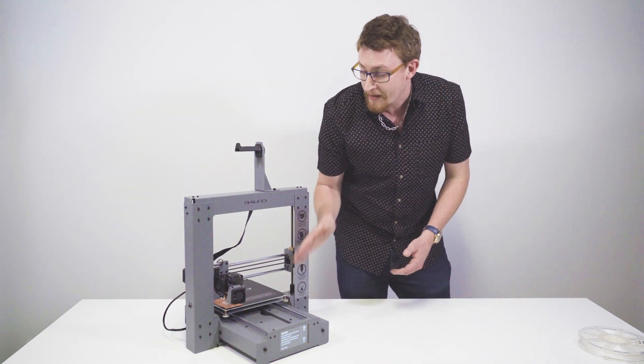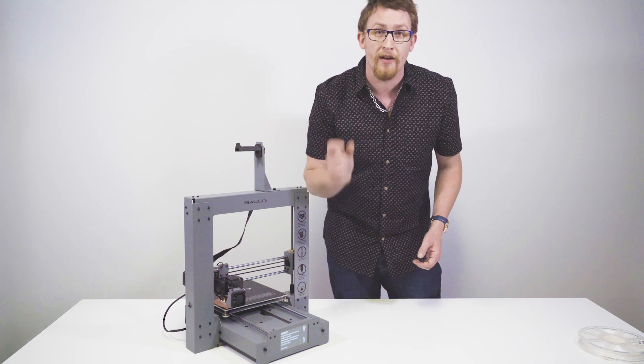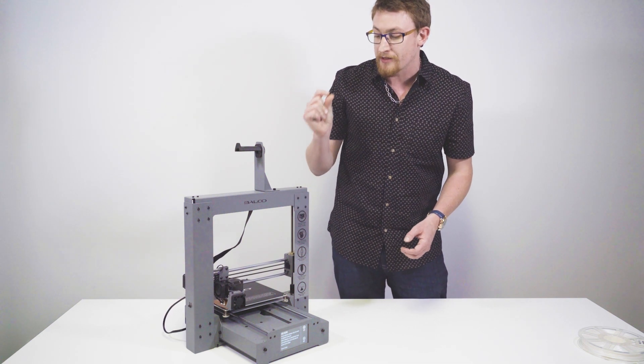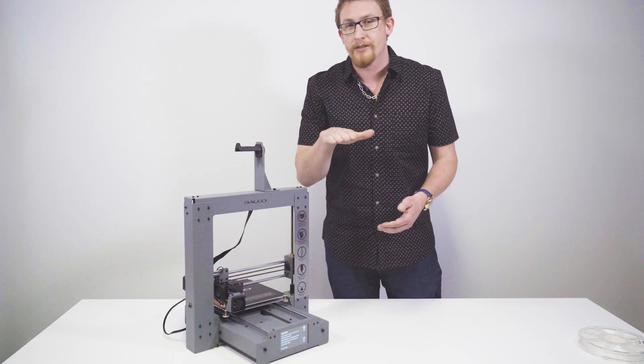It's going to calibrate automatically and come down. That's when we're going to use the thumb wheels to make it as close as possible to the card, with a little bit of resistance when we pull it.